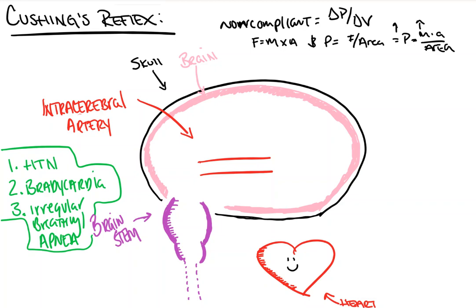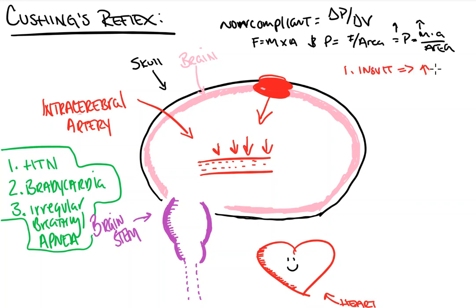Imagine we get hit in the head and develop a large hematoma — a subdural bleed — that starts to put pressure on the brain and push everything down. This is going to put pressure on our intracerebral arteries and narrow their lumen. So one insult results in increased intracranial pressure — increased pressure within the skull — which then leads to compression of intracranial vessels.